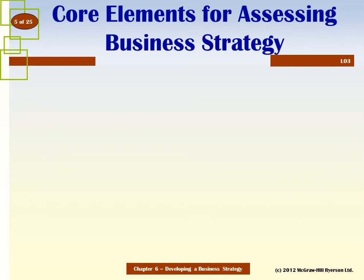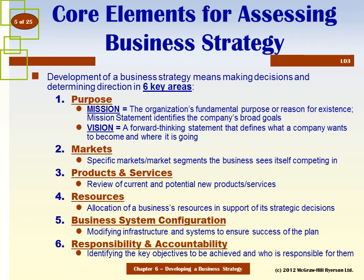Developing a strategy means making decisions in six key fundamental areas. The first is purpose — the overall mission and vision that guides managers in their decisions. A mission statement defines the reasons we exist and our broad goals. For instance, Walmart's mission is helping people save money so they can live better. Canadian Tire's mission is to create customers for life and shareholder value.